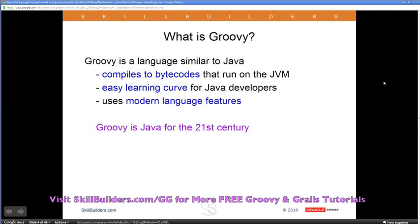Groovy is a programming language with a unique relationship to Java. Groovy code compiles to Java bytecodes, so even though you're writing in a different language, when you compile the code it turns into bytecodes that run on the JVM. This means it works really easily with Java and works on your existing infrastructure — for example, deployment of Groovy code is exactly the same as deployment of Java code.